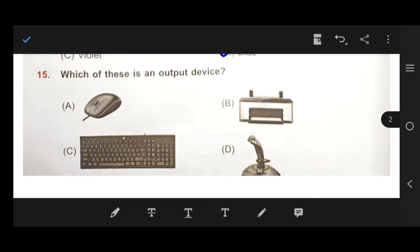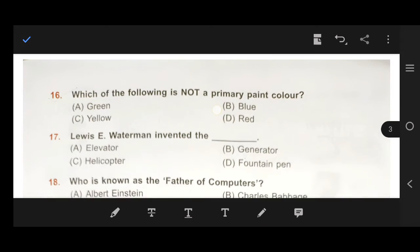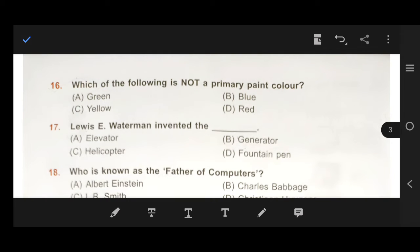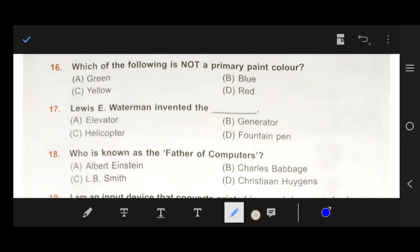Next, number 15, which of these is an output device? Output device is B, scanner. Next, number 16, which of the following is not a primary paint color? Our right answer is green. Number 17, Lovey Waterman invented the fountain pen. Right answer D, fountain pen.